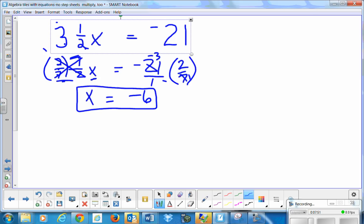Again, I need to actually put it back in the original problem. So I have 7 halves times negative 6. Is that really equal to negative 21 in the original problem? 7 halves times negative 6. The 2 and the 6 cancel out. I have negative 3 times 7, which is negative 21 over 1, which is equal to negative 21. So yes, it checks out.